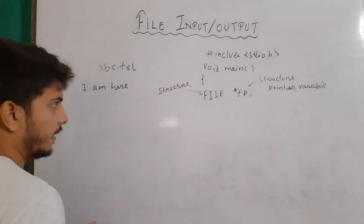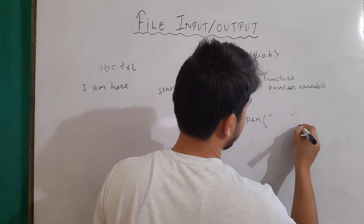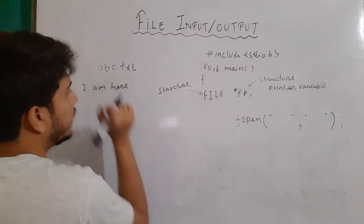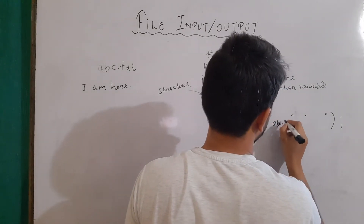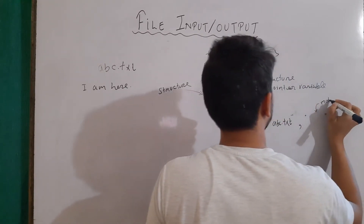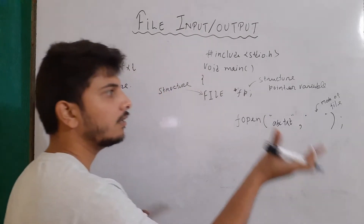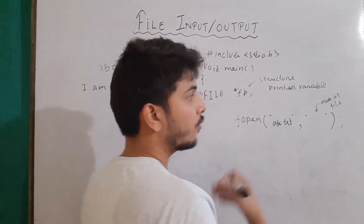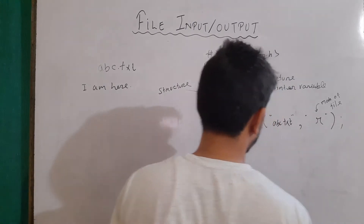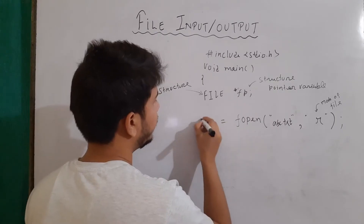Now we need to open a file. For that we use the function fopen. Inside it, we generally write two arguments. The first one will be the name of our file, so I'll write abc.txt. Then we have to write the mode of file, which means which operation you want to perform — whether you want to read the file, write something to it, overwrite it, or append the contents. For reading purpose, I'll write r here. Note that these are in double quotes, so we are passing a string. Then I'll assign the return value to fp.